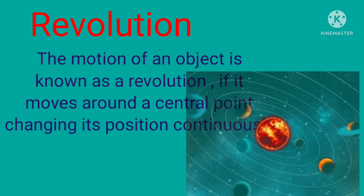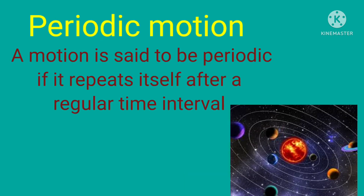Next is revolution. The motion of an object is known as revolution if it moves around a central point, changing its position continuously. The best example is our solar system, in which every planet is revolving around a central axis, the sun.